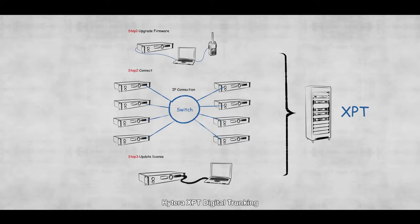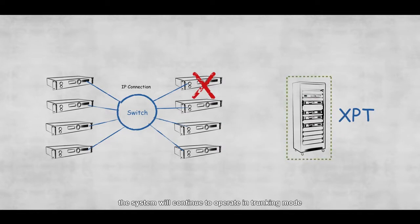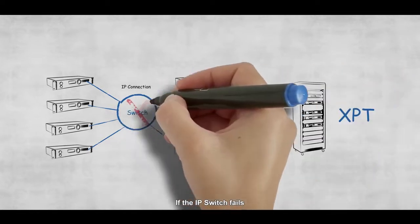Hytera XPT digital trunking supports two-level fail-safe control. If one or more repeaters fail on the system, the system will continue to operate in trunking mode. If the IP switch fails, the repeaters will automatically revert to digital conventional mode.